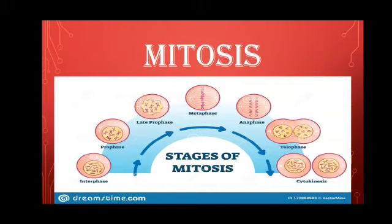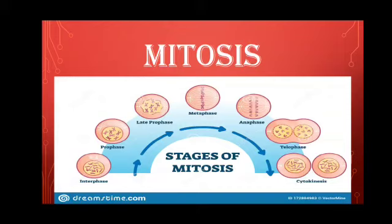After interphase, the cell enters karyokinesis, which begins with prophase. In prophase, the centrioles move apart and reach the opposite poles. The chromosomes become very distinct and are already duplicated as paired chromatids. Sister chromatids get attached to each other at a small region called the centromere. Spindle fibers appear between the daughter centrioles forming the achromatic spindle, and the nuclear membrane and nucleolus disappear. Prophase can be studied as early prophase and late prophase.